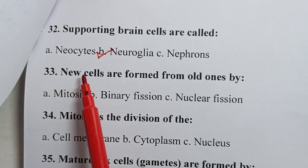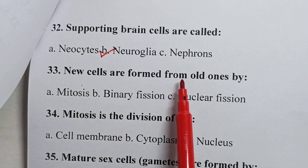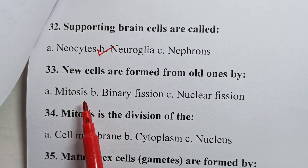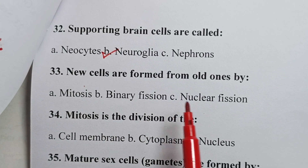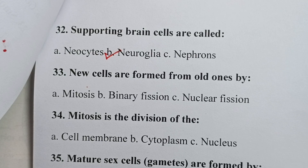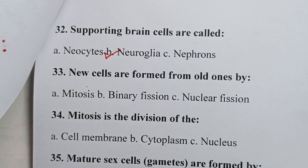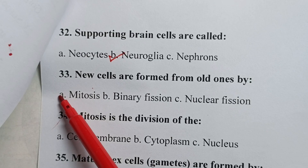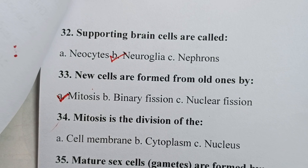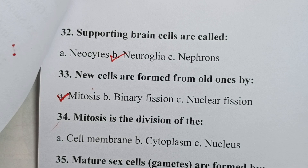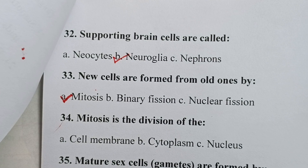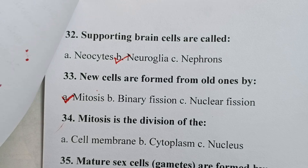Question thirty-three: new cells are formed from all cells by — is it mitosis, binary fission, or nuclear fission? The correct answer is mitosis. Mitosis is a process whereby all cells give rise to new cells.